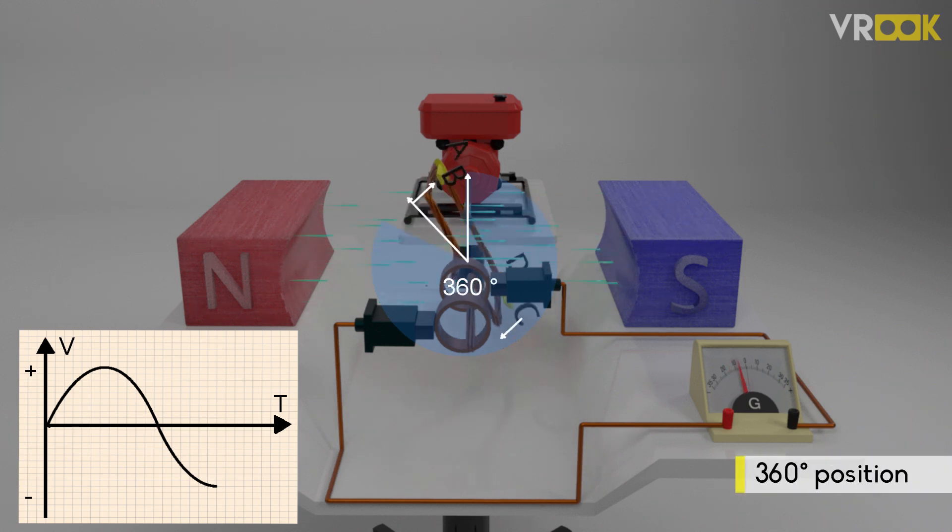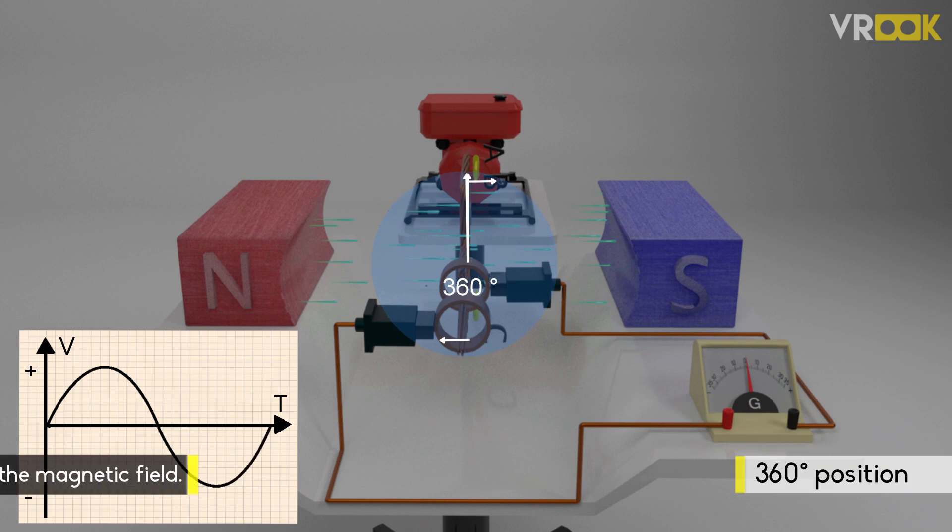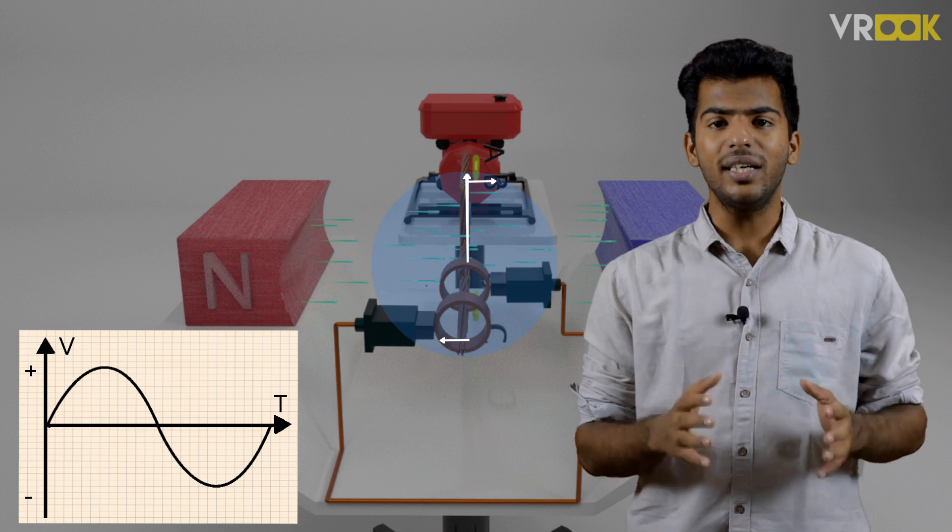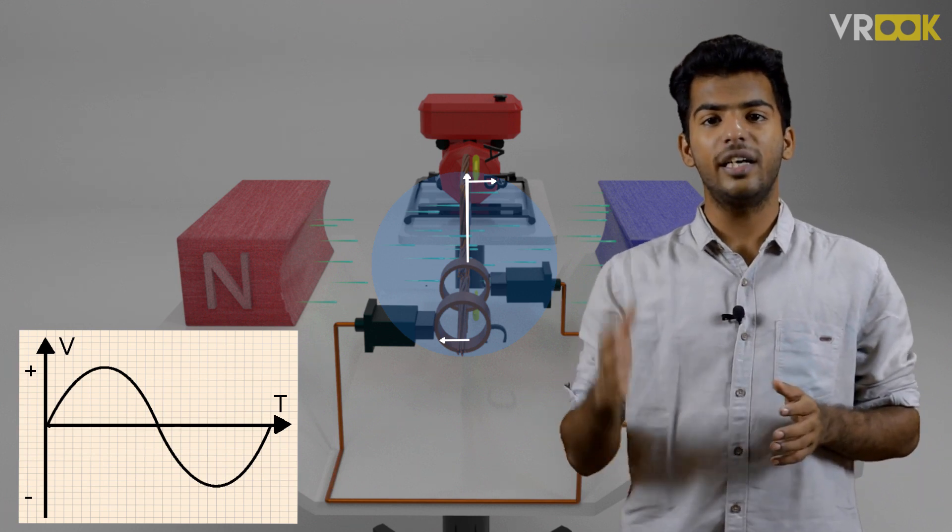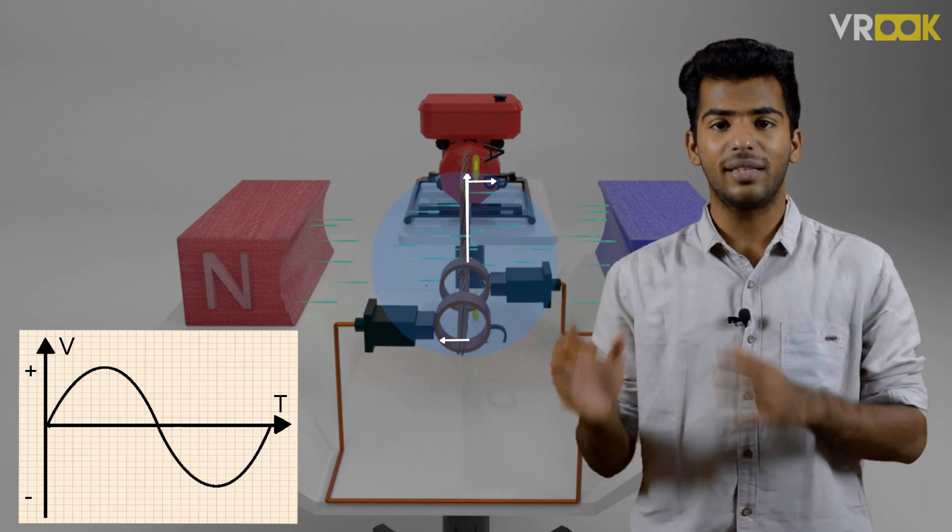Finally, at 360 degrees, that is, after it completes one full rotation, the components of velocity becomes parallel to the field again and EMF becomes zero. This is one complete cycle of an alternating current produced by this generator.